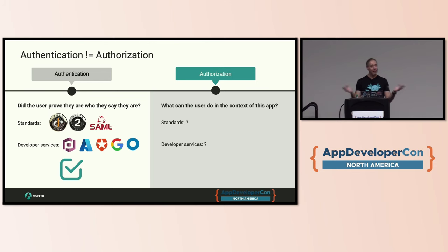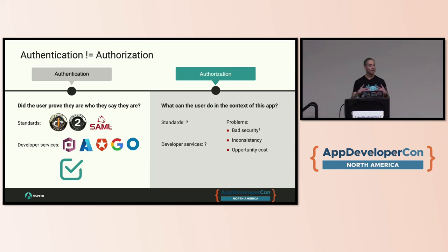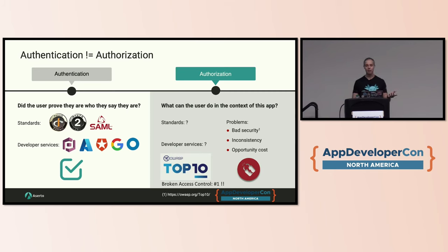So the bottom line is that everybody has had to build their own. Everybody rolls their own. And there are a bunch of problems associated with that. First and foremost: bad security. The second is, as you roll out a microservices architecture, you have a bunch of inconsistency — every microservice does it differently, which is super hard to wrangle. And then the third is opportunity cost: you're doing a bunch of undifferentiated heavy lifting building authorization into each API or application instead of using something off the shelf. The OWASP ranks broken access control as the number one on their top 10 list of vulnerabilities, and they estimate that a whopping 94% of the applications they test exhibit some form of broken access control. A real problem.